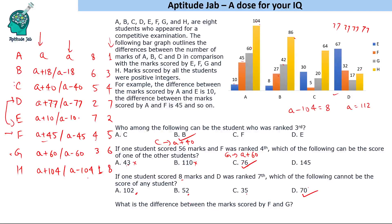Question 4: What is the difference between the marks scored by F and G? F corresponds to an offset of 45 and G to 60, so the difference is 15. You can verify this on the graph: in every case the difference between F and G is consistently 15. So the answer is 15 marks.